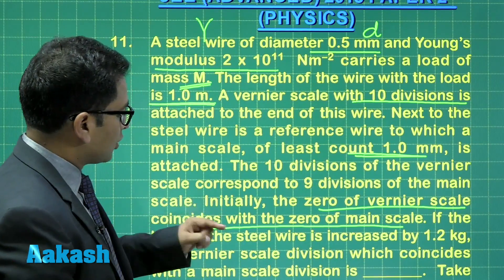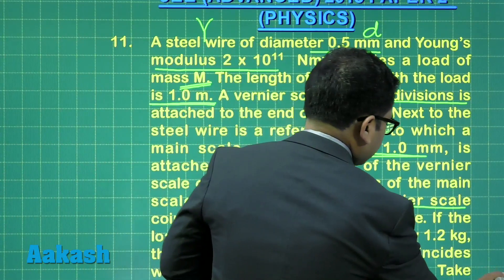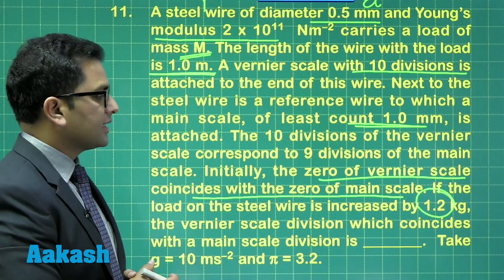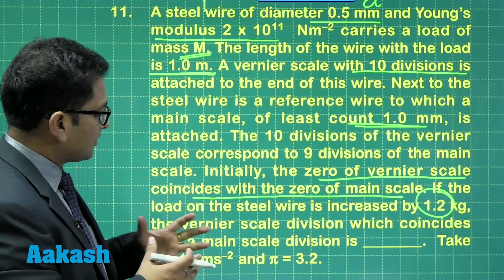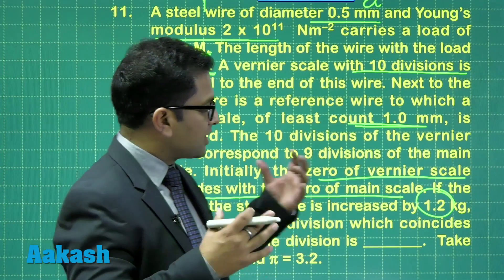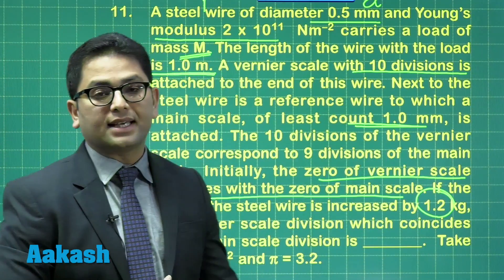Now it says if the load on the steel wire is increased by 1.2 kg, additional load has been increased, the vernier scale division which coincides with the main scale division is this.